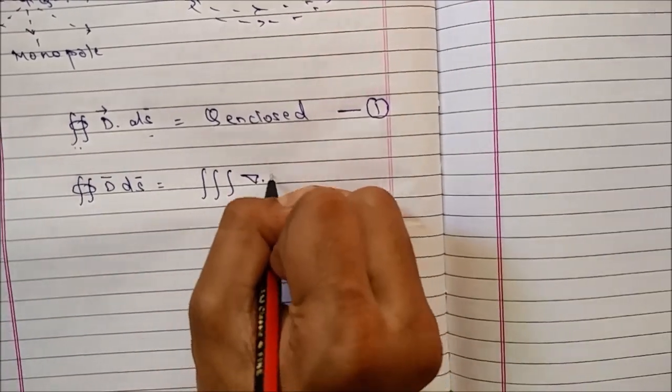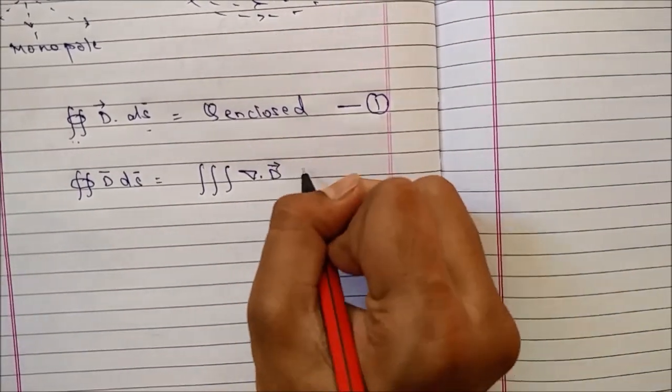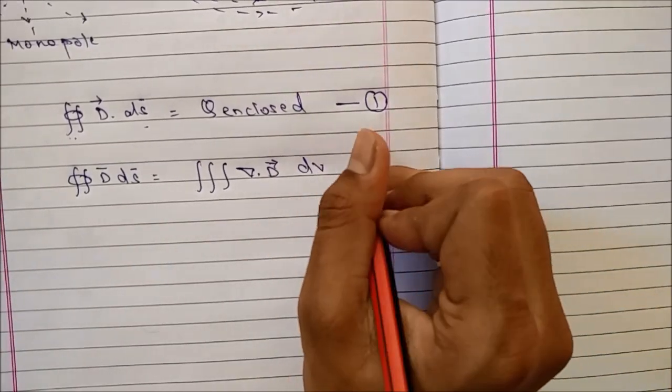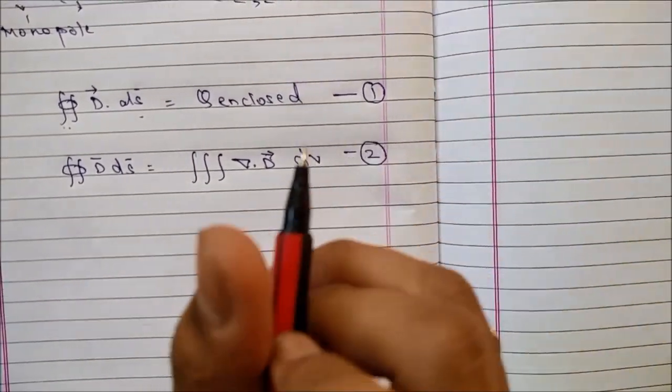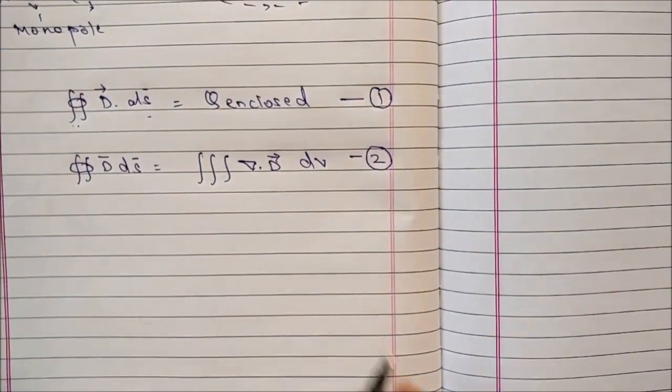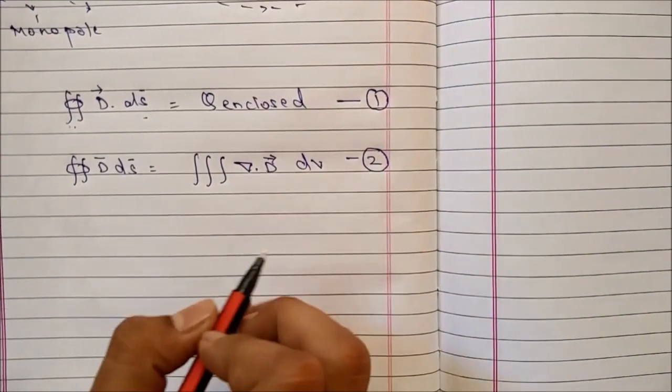This closed surface area integral of electric flux density will be equal to the volume integral of the divergence of that vector. Consider this as equation number two.